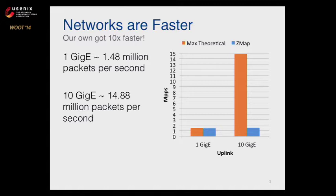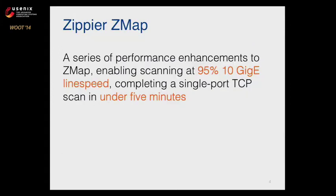But it turns out it doesn't run much faster at all on 10 gig — only about 100,000 packets per second faster, slightly over one gigabit. So, why not full 10 gig? Why wait 45 minutes when we could wait four and a half minutes? What I'm presenting here is a zippier ZMAP that runs at 95% of 10 gigabit ethernet and completes single port TCP scans in under five minutes.